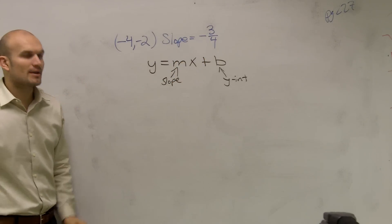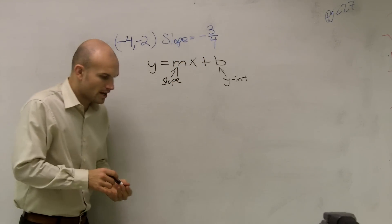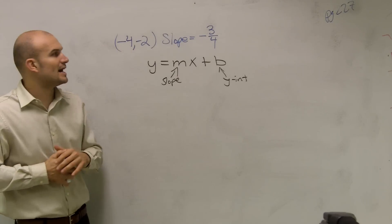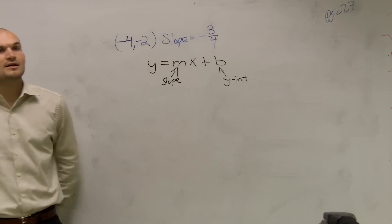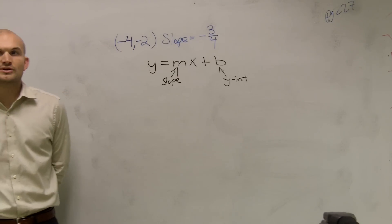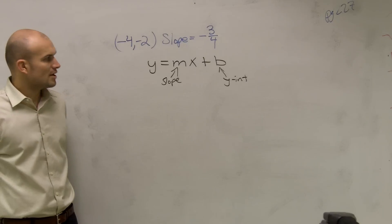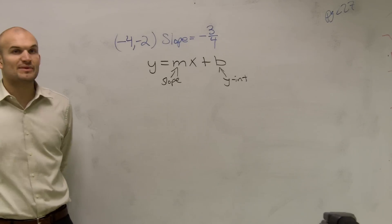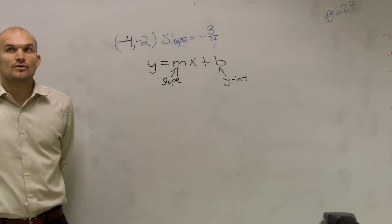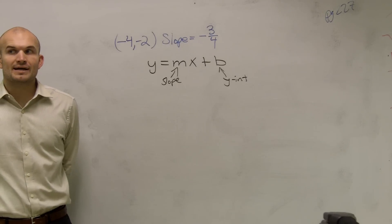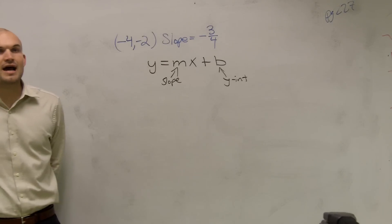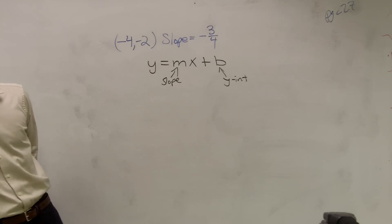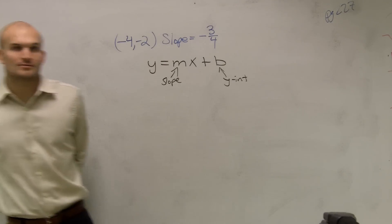So now what I'm going to say is, what if I ask you now to find the slope-intercept — or find the y equals mx plus b form of the line — if I have the slope and I give you a point.